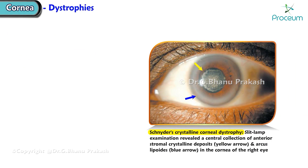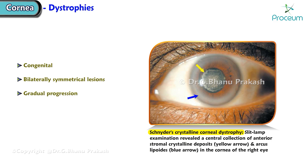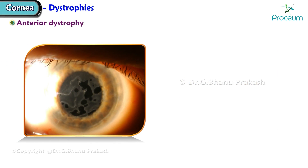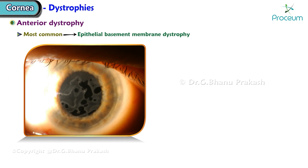Corneal dystrophies are congenital, bilaterally symmetrical lesions that have a gradual progression and are associated with corneal opacities. The most common anterior dystrophy is epithelial basement membrane dystrophy, also known as Cogan's dystrophy.